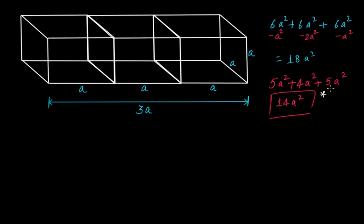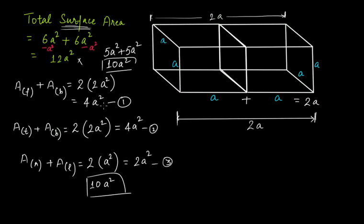Remember: when you join two or more cubes, the new shape is a cuboid, not a cube. Don't make the mistake of simply adding all the total surface areas. You must calculate the total surface area either by the detailed method or by subtracting the areas of the faces that are lost when the cubes are joined together.